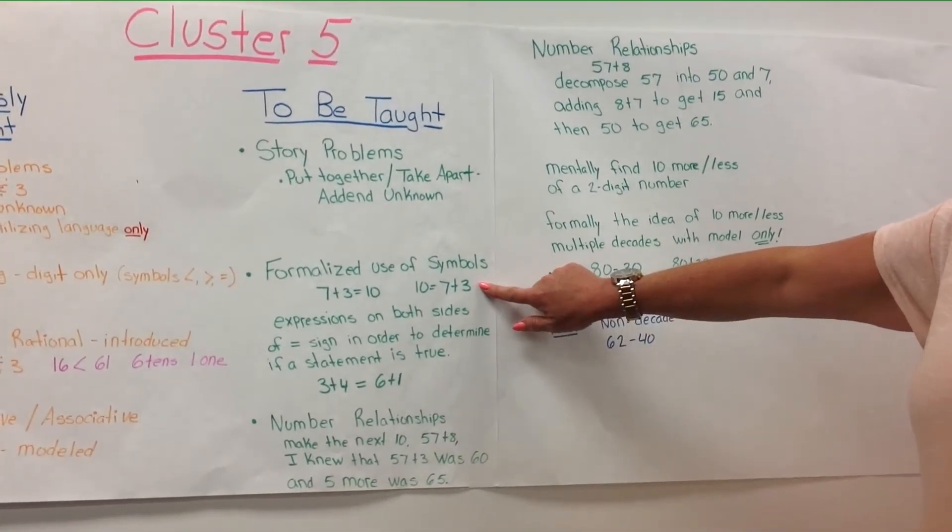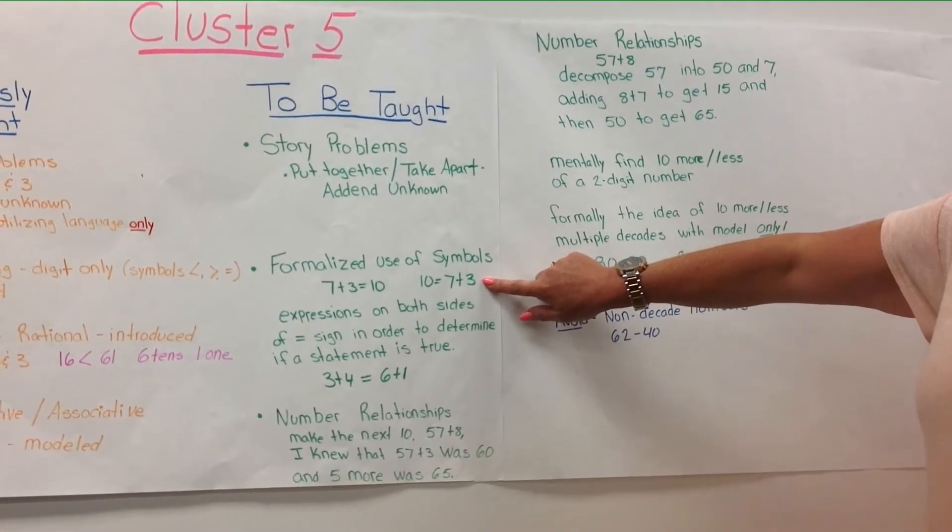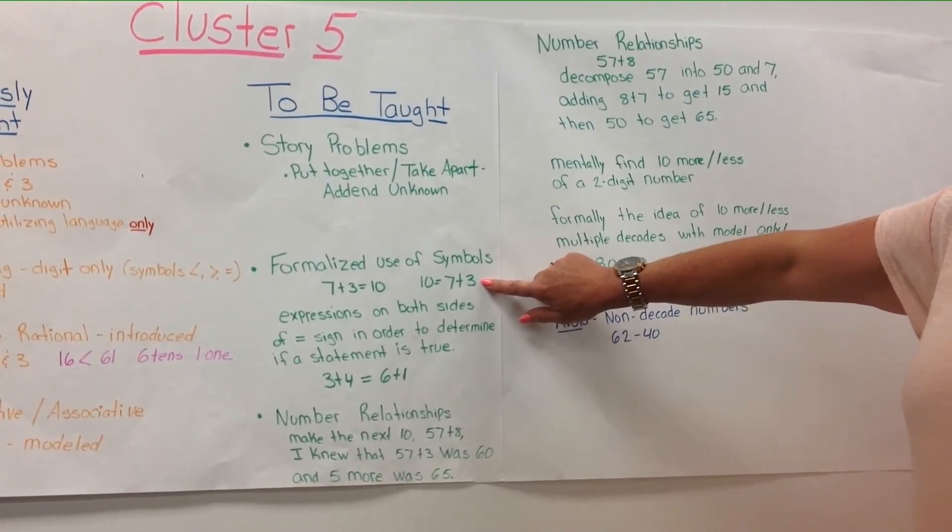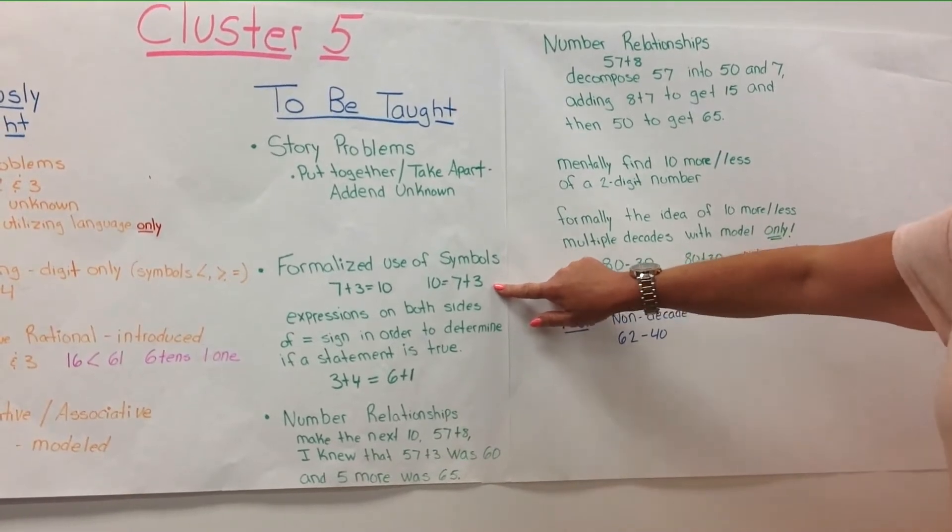The formalized use of symbols for an equation is finally introduced. Students will recognize that 7 plus 3 equals 10, and 10 equals 7 plus 3.